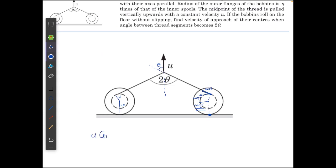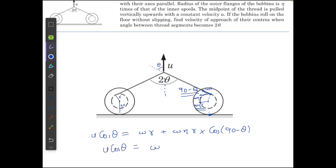From this condition, we get that U cosθ should equal omega r plus omega eta r times cos(90° - θ), because this angle is 90° minus theta. So what we get is U cosθ equals omega r times (1 + eta sinθ).